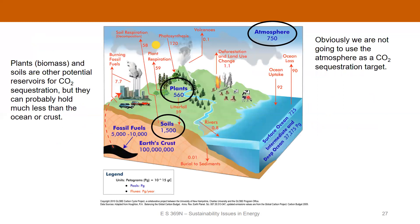There are other reservoirs worth mentioning — plants and soils. Soils can hold some carbon but not nearly as much as the crust or the ocean. The atmosphere is obviously not a carbon sequestration target since we're already doing that and want to move away from it. And fossil fuels — it's difficult to turn things into fossil fuel over any human timescale, so we won't worry about that.